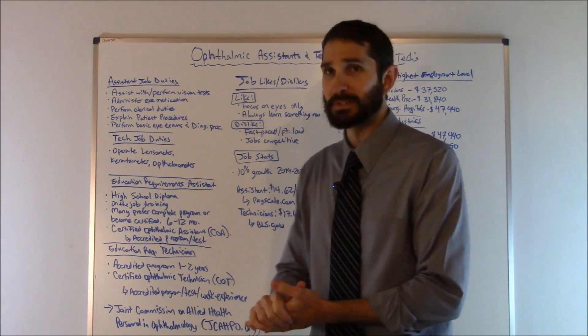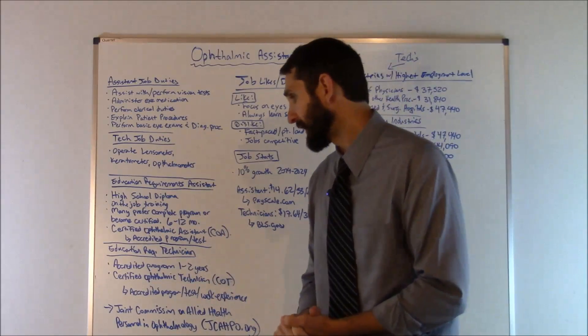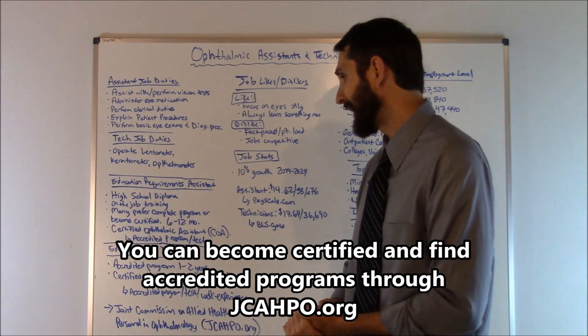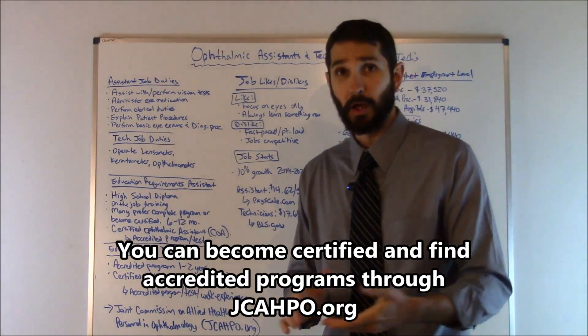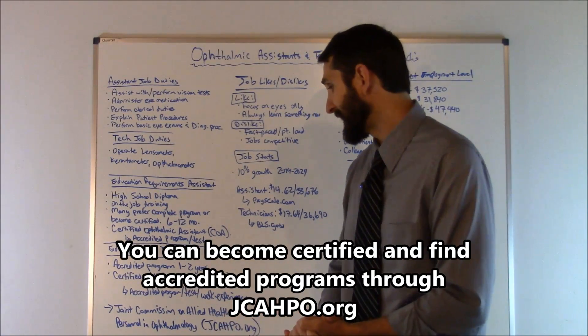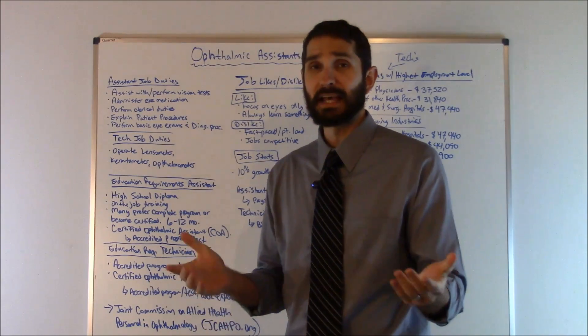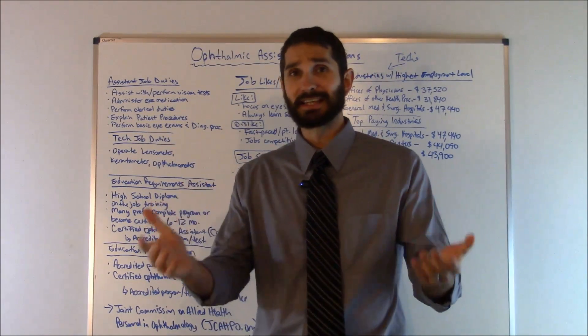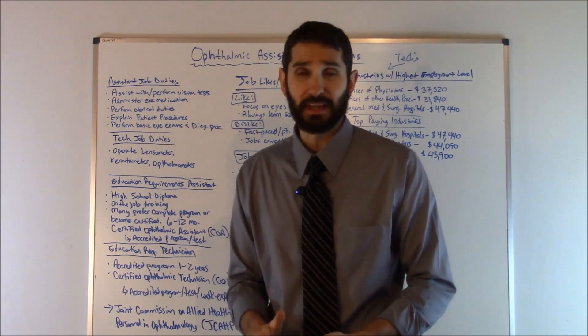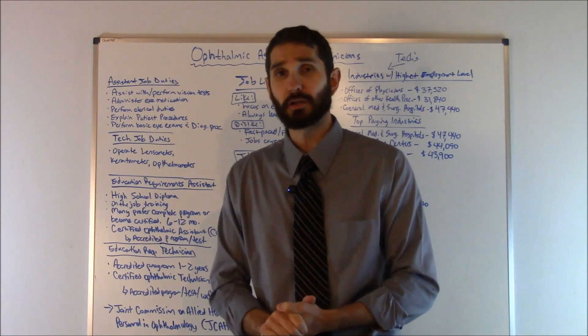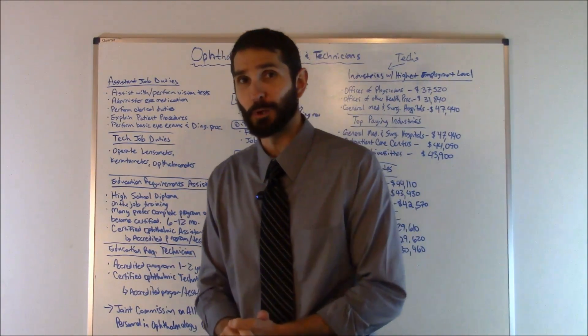That's the COT designation, and you do become accredited through the Joint Commission on Allied Health Personnel in Ophthalmology. You can go to their website at jcahpo.org, and that website has a lot of good information. You can find out the exact requirements for certification and find some accredited programs through there.